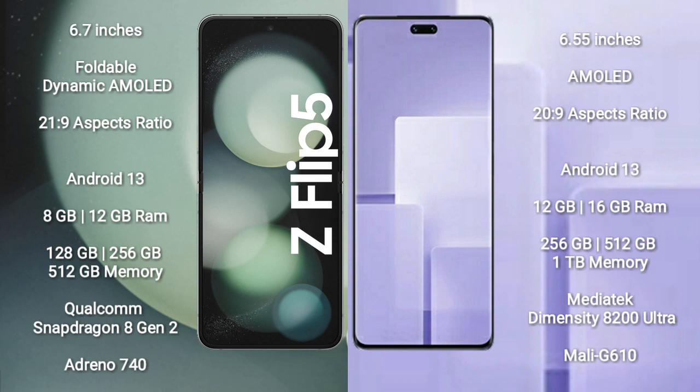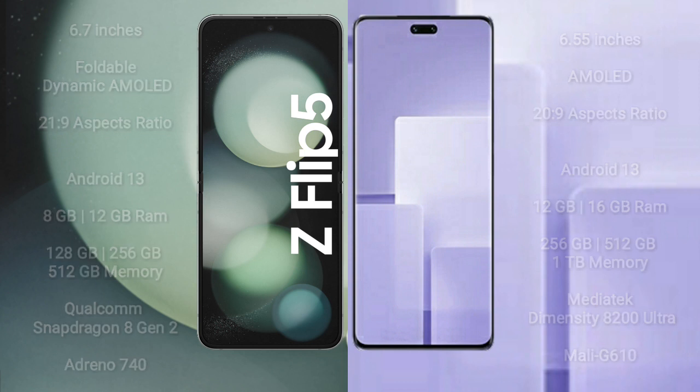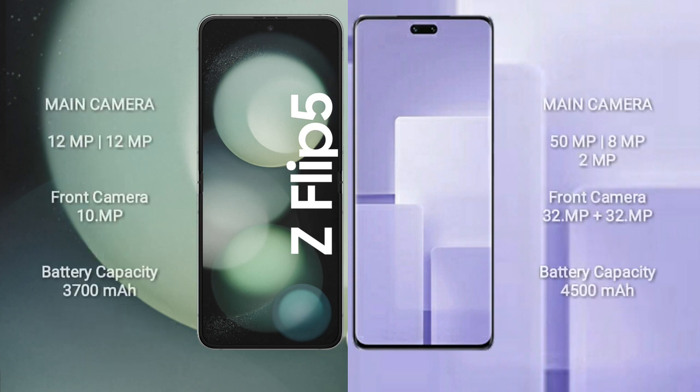Xiaomi CB3 comes with 12GB and 16GB RAM, and 256GB, 512GB, and 1TB internal storage, with a MediaTek Dimensity 8200 Ultra processor and Mali-G610 GPU.